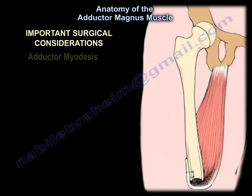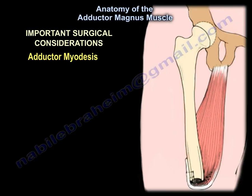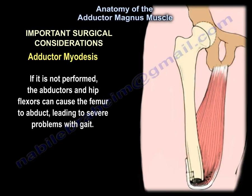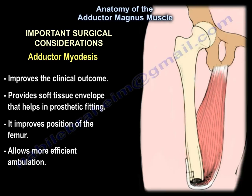Adductor myodesis is the critical part of the transfemoral amputation. If it is not performed, the abductor and hip flexors can cause the femur to abduct, leading to severe problems with gait. Adductor myodesis improves clinical outcome, provides soft tissue envelope that helps in prosthetic fitting, improves position of the femur, and allows more efficient ambulation.